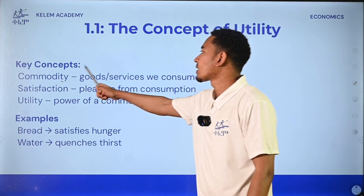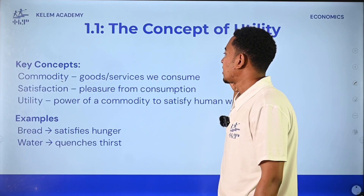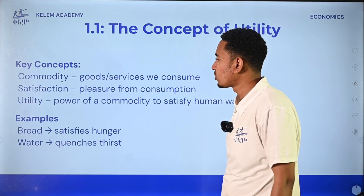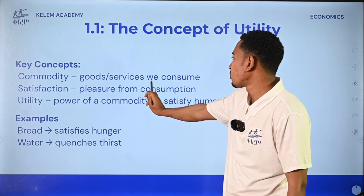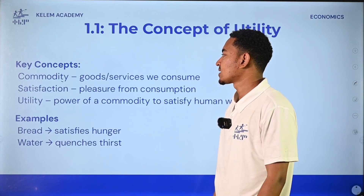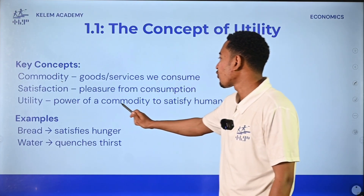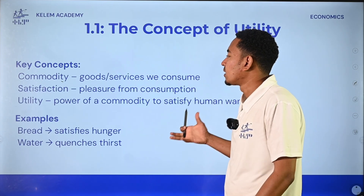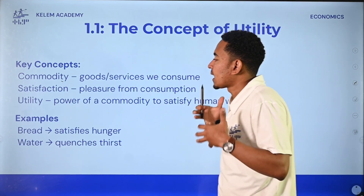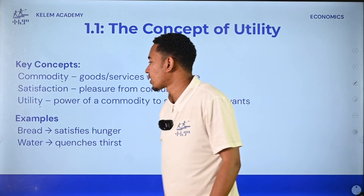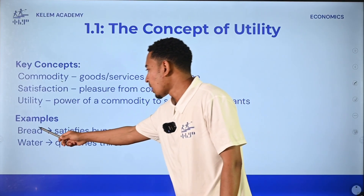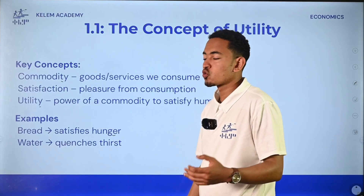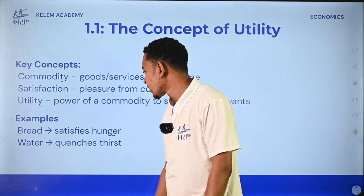Commodity is a good or service we consume. This is a key concept. Satisfaction is a pleasure from consumption. Happiness is utility. The power of a commodity is to satisfy human wants. The power of utility is to satisfy human wants.